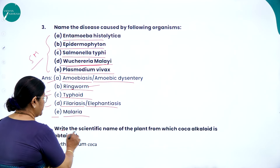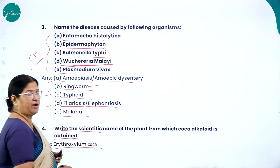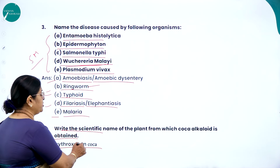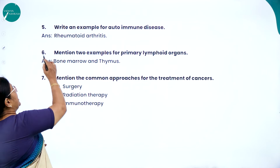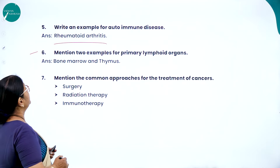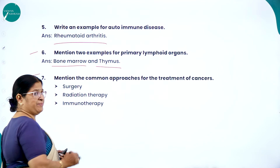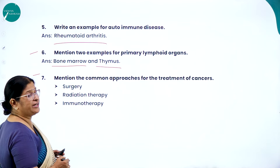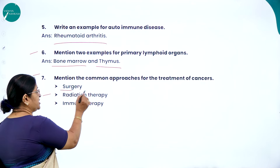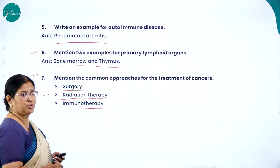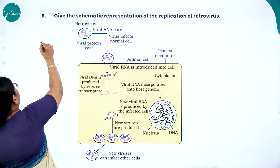Write the scientific name of the plant from which the cocaine alkaloid is obtained — it is Erythroxylum coca, also called coke or crack. Write an example for autoimmune disease — the answer is rheumatoid arthritis. Mention two examples for primary lymphoid organs — bone marrow and thymus. Mention the common approaches for the treatment of cancer — surgery, radiation therapy, or immunotherapy.